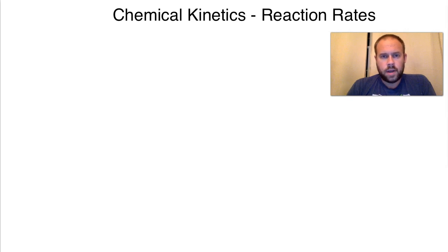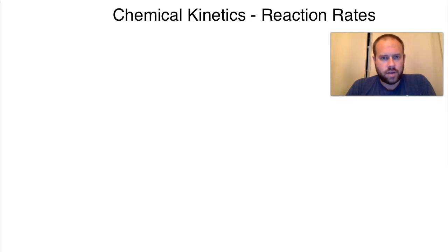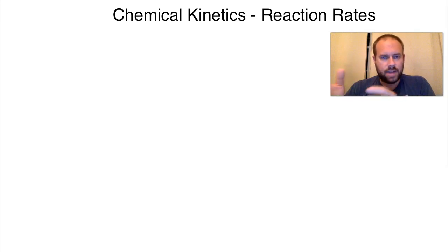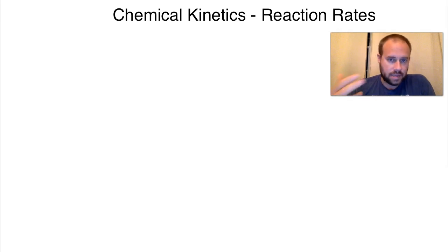Hi there, everybody. Welcome to another Chem Complete series. We are going to get ready to start Chemical Kinetics. This is typically a chapter in General Chemistry II or a second semester college chemistry course where you look at rates of reactions and how those rates are affected by concentration, rate laws, and the order of reaction. We call all of this chemical kinetics — kinetics meaning the motion of molecules and how they behave in these rates.